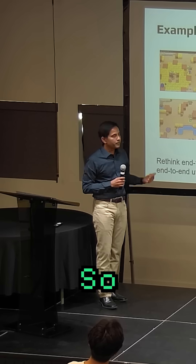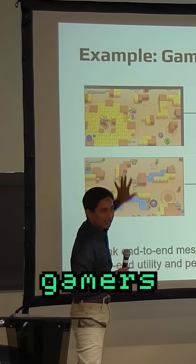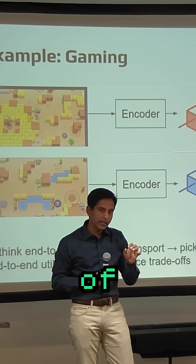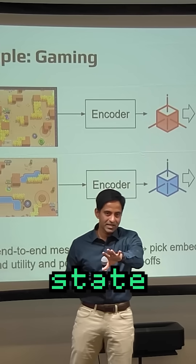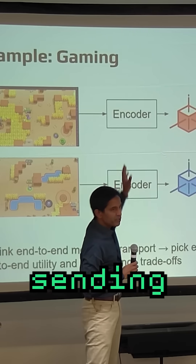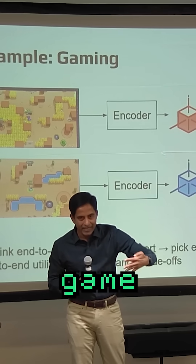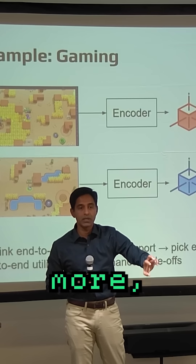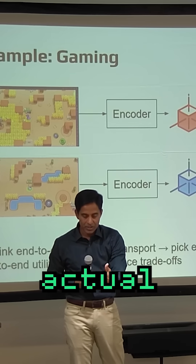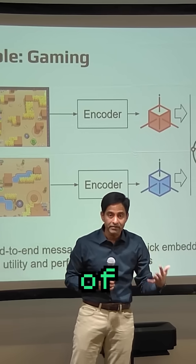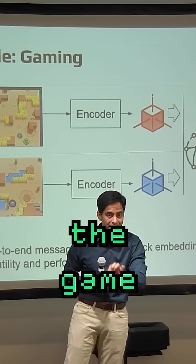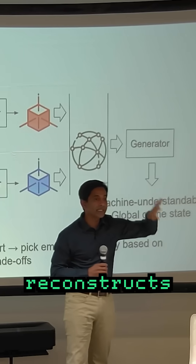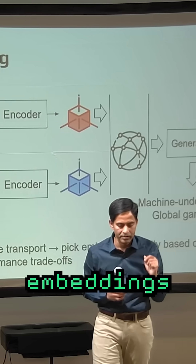So what's happening here? The idea is that if there are gamers, there is an encoder that's going to create an encoding of your game state and your friend's game state. Instead of sending actual snapshots of game state, you're actually sending encodings which are more succinct than the actual data, but more representative of what it is you're trying to do in the context of the game. The embeddings go over the network, and then there's a generator that reconstructs what you have from the embeddings.